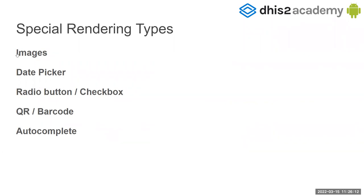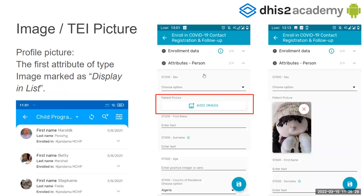Now, some special rendering types. We have images. We also have pickers, radio buttons or checkboxes, and also codes like QR code or barcode. And for long lists, you will also have autocomplete.